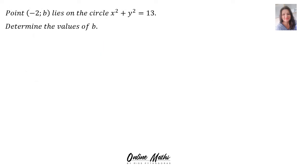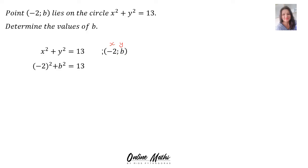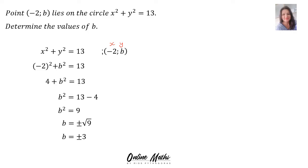Let's do another example. Point (−2, b) lies on the circle x² + y² = 13. Determine the values of b. A point consists of an x and a y coordinate, so we substitute x = −2 and y = b: (−2)² + b² = 13, giving 4 + b² = 13. Moving 4 across: b² = 9. We want b, so we take the square root of 9, and remember to add plus or minus. Therefore, b = ±3.